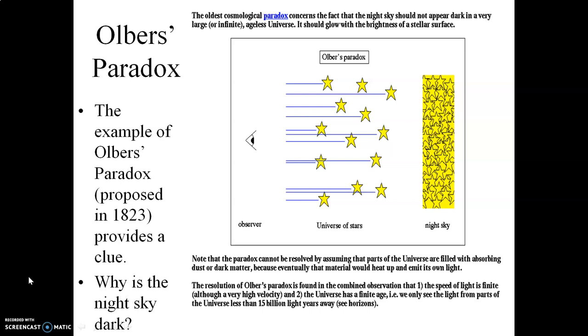So therefore, if the universe was infinitely large and infinitely old, if you looked in every single direction, you would eventually have your line of sight fall onto the surface of a star. So therefore, the sky should be extremely bright. But it's not.